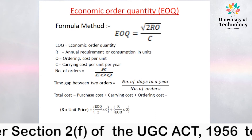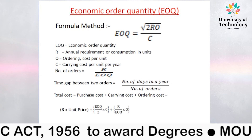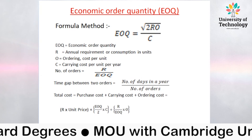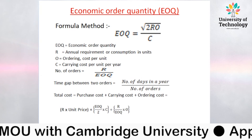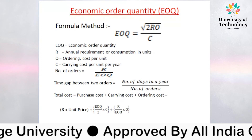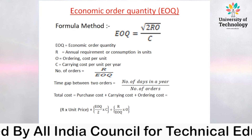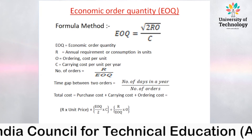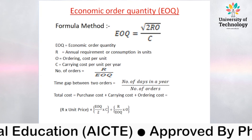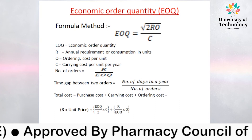After calculating the time gap between two orders, we discuss total cost. The formula is: Total Cost = Purchase Cost + Carrying Cost + Ordering Cost. Purchase cost = R × unit price. Carrying cost = (EOQ / 2) × C. Ordering cost = (R / EOQ) × O.